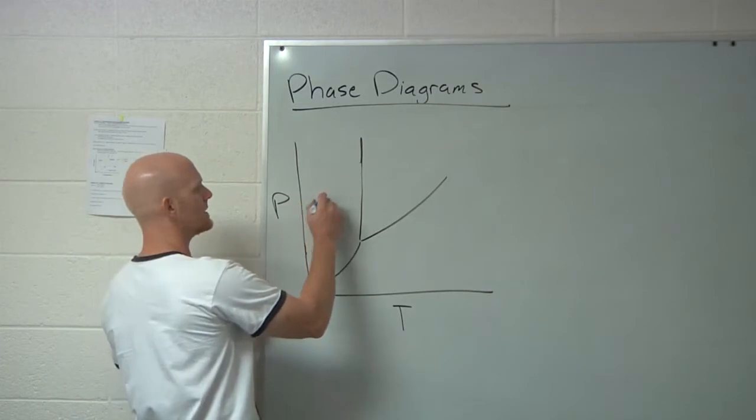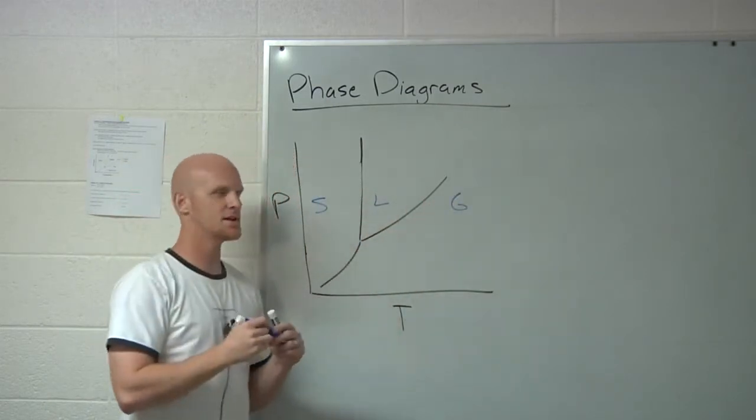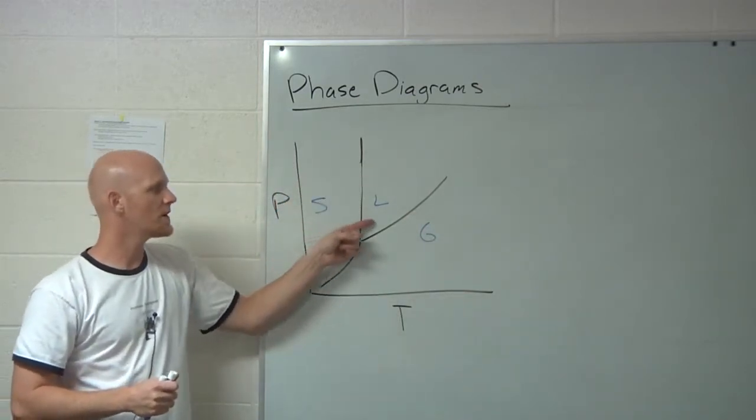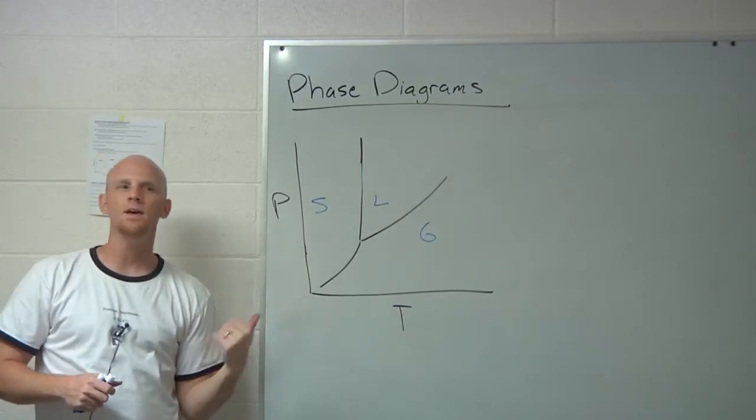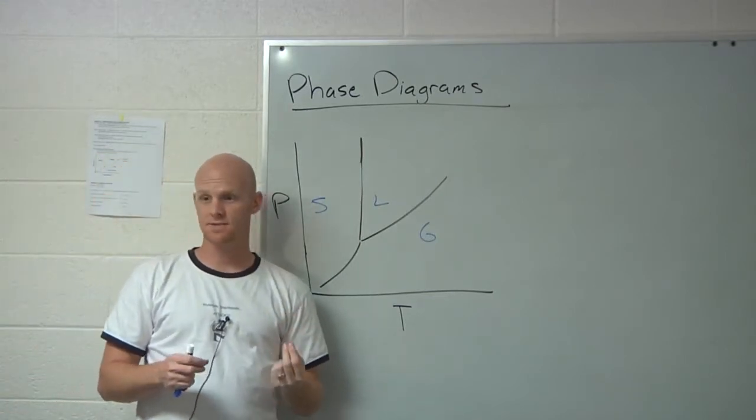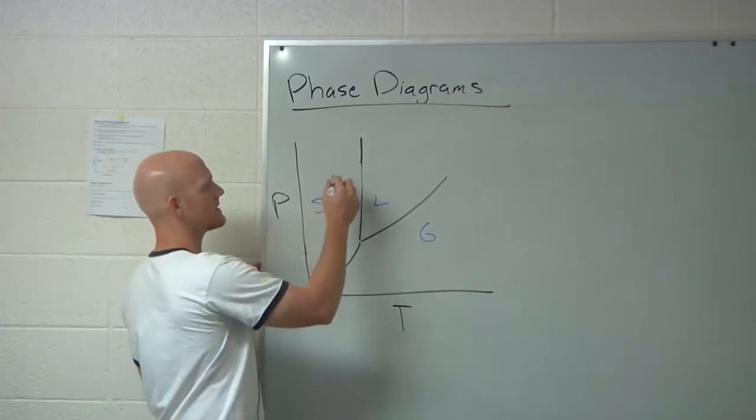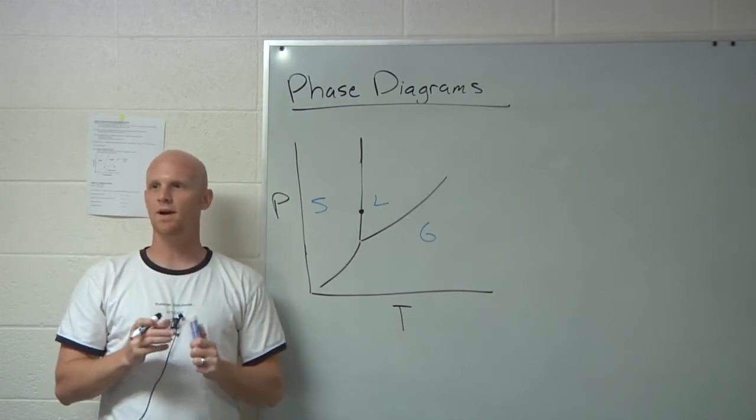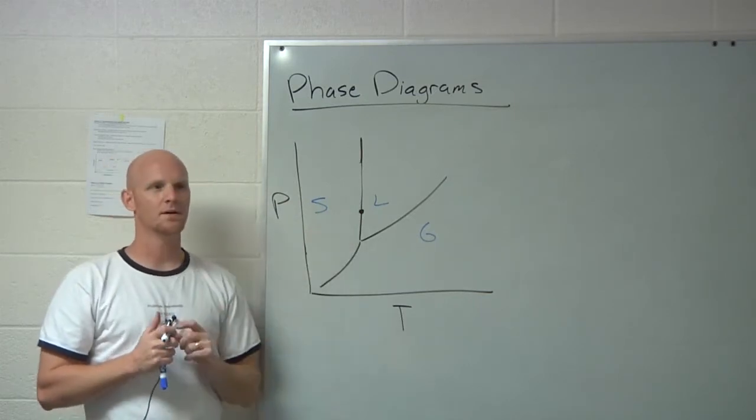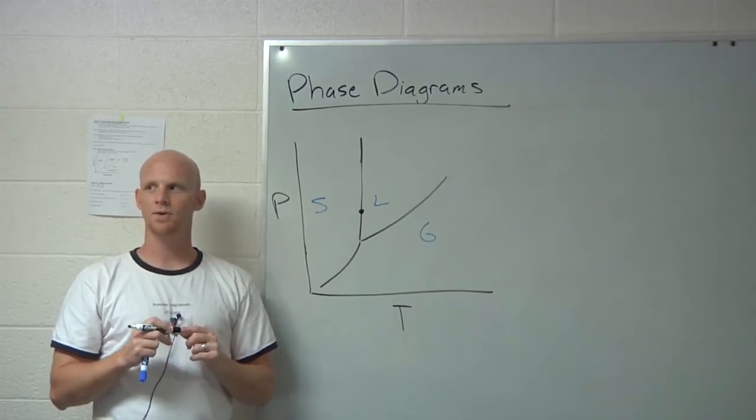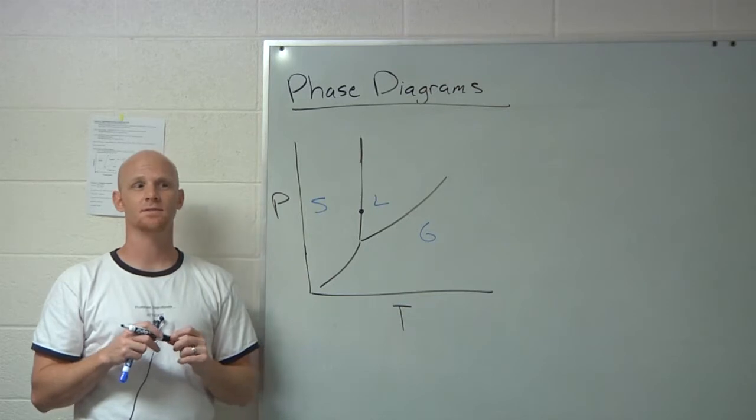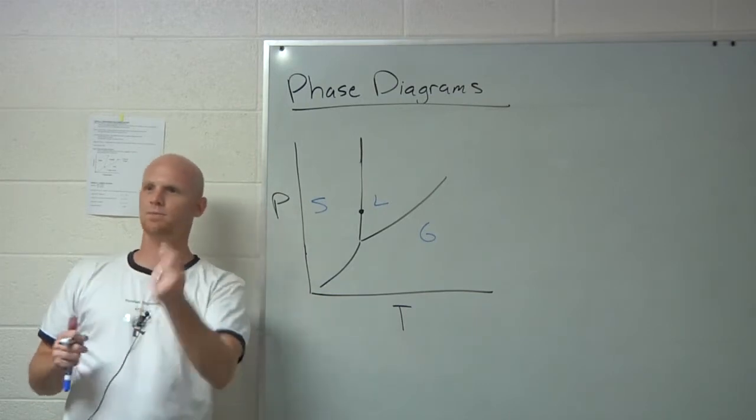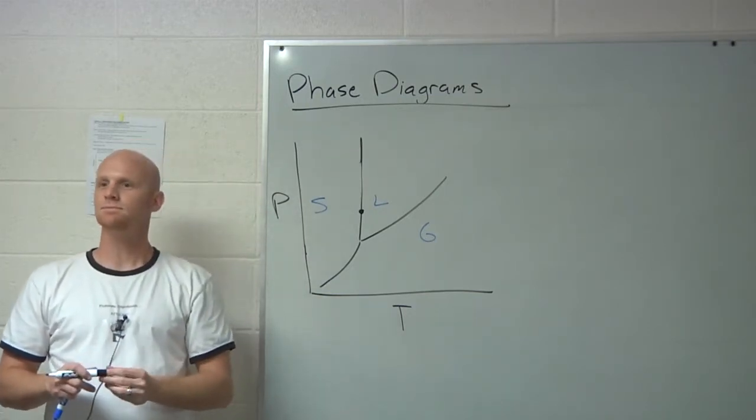Hopefully that helps you remember that we go from solid to liquid to gas as we do this. The lines here we call the lines of equilibrium. If you're on any one of these lines then you actually have two phases at equilibrium with each other. So if I was say right here, what two phases would be at equilibrium? Solid-liquid. What kind of point would that be where solid-liquid are at equilibrium? It's your melting point.